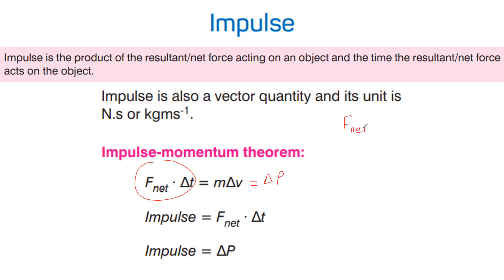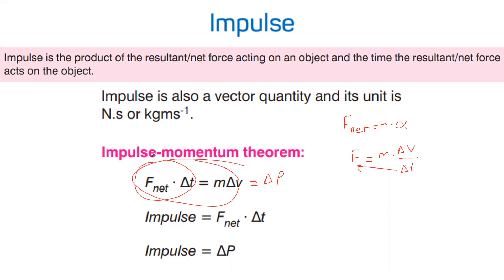This comes from Newton's second law. F net equals m times acceleration, so we can write f net equals m times delta v over delta t. After cross multiplication, we finally get f times delta t equals m times delta v. We are going to use these two formulas in our questions.